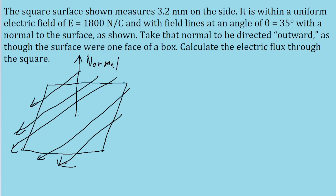The angle between this normal and the electric field lines is theta, which is given as 35 degrees. The problem asks us to calculate the electric flux through the square surface.